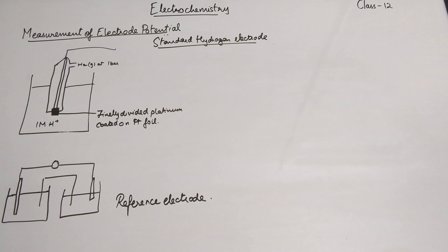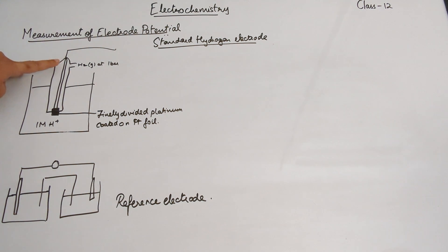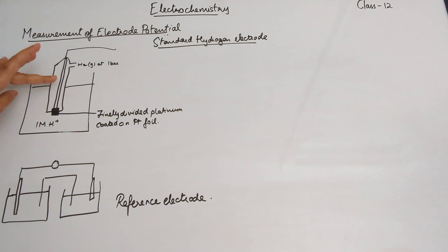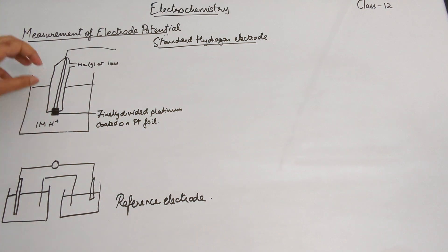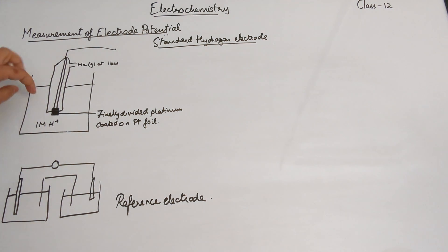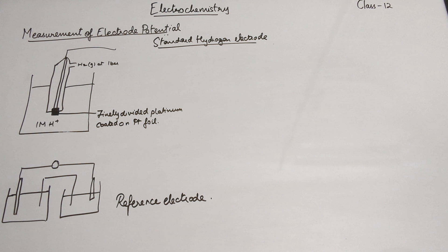The standard hydrogen electrode consists of four things. First, you have the electrode itself inside a glass tube — hydrogen is being pumped into it. There is a platinum rod, and at the end there is finely divided platinum coated on a foil. The electrolyte for this electrode is a one molar H⁺ solution, basically an acid solution with a concentration of one molar.